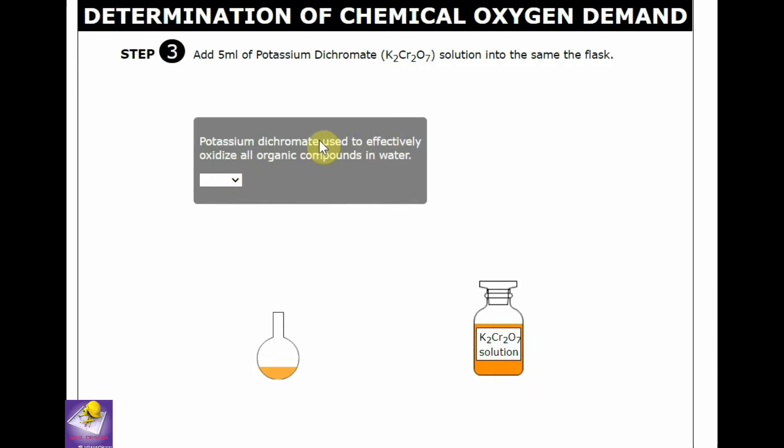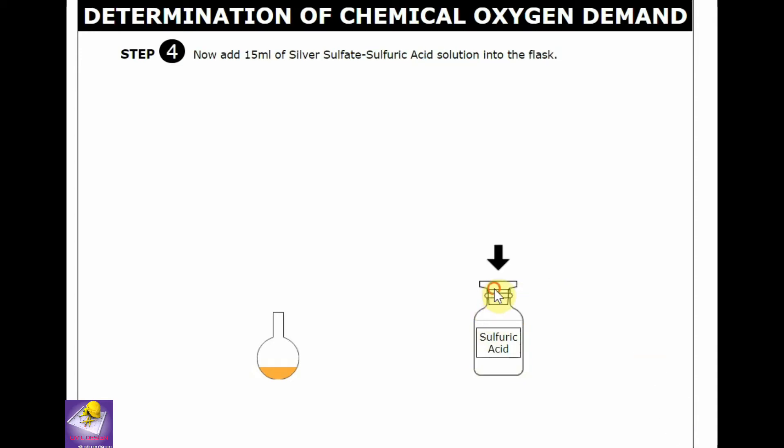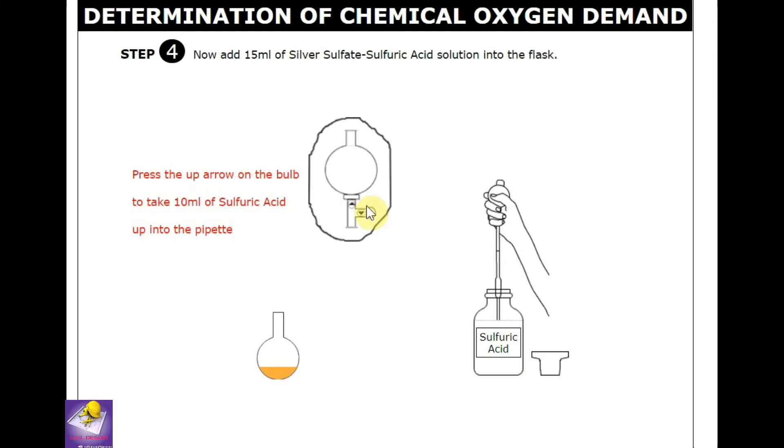Potassium dichromate is used to effectively oxidize all organic compounds in water. That's why we use potassium dichromate to that solution. Now add diluted sulfuric acid of 15 ml to that flask by the graduated pipette.